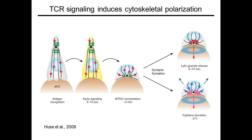This is accompanied by a dramatic change in T-cell shape. Within minutes, the T-cell assumes a cup-shaped configuration facing the APC, which is characterized by polarization of both the actin and microtubule cytoskeletons.